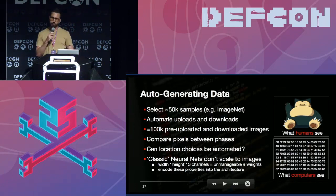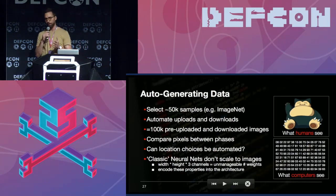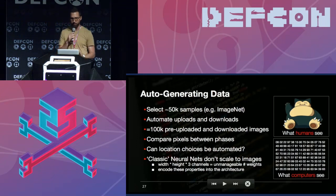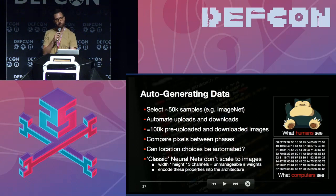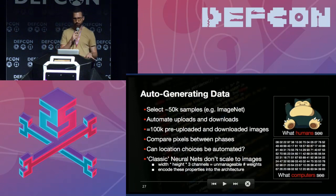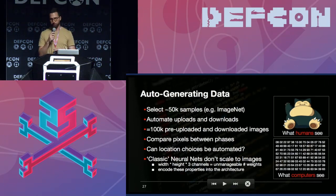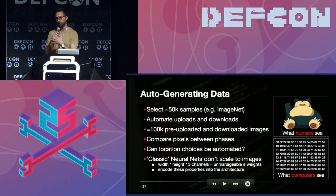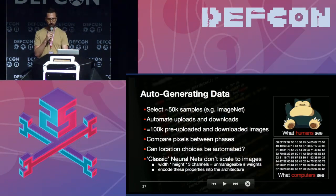Classic neural networks — simple single-hidden-layer types — don't scale well to images. When you have so many dimensions from width, height, and three RGB channels, you end up with an unmanageable number of weights that take way too long to compute. Starting in the 2010s, a class of algorithms called convolutional neural networks emerged. These allow us to encode the properties of images into the network architecture itself. Instead of single-dimensional hidden layers, we deal with multi-dimensional hidden layers.